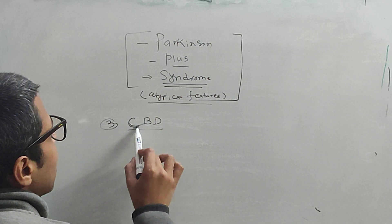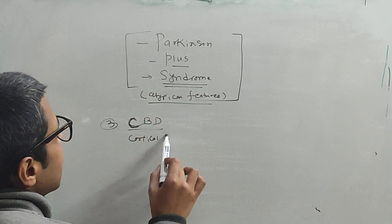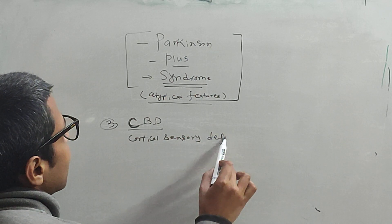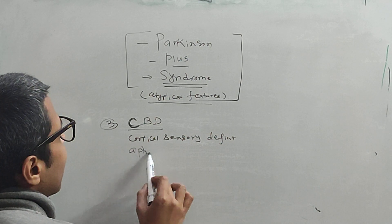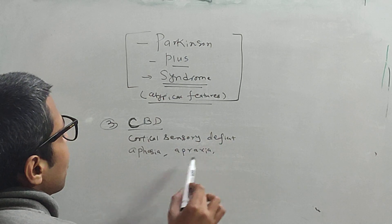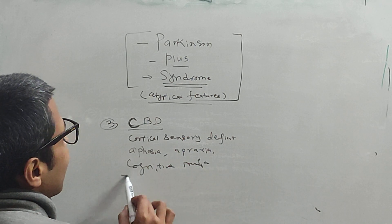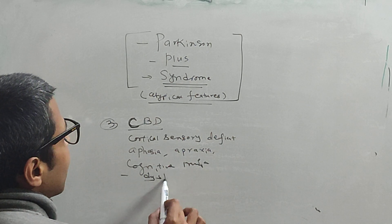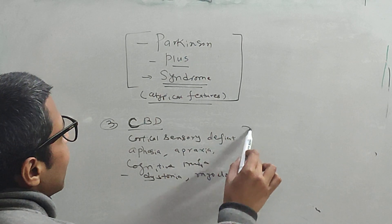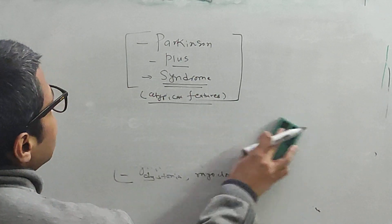The third condition is Corticobasal Degeneration. Here there is cortical degeneration, so you will see cortical features like cortical sensory deficits, aphasia, apraxia, cognitive impairment, dystonia, and myoclonus — these are in addition to the Parkinsonian features.